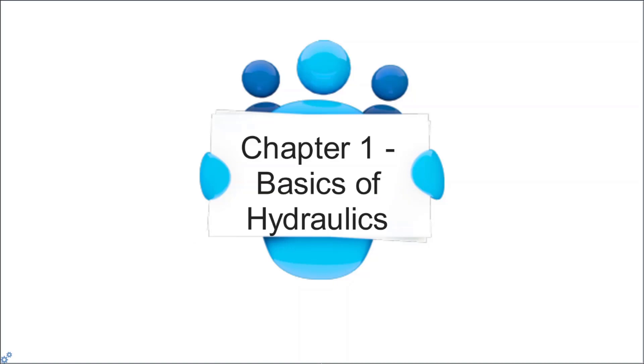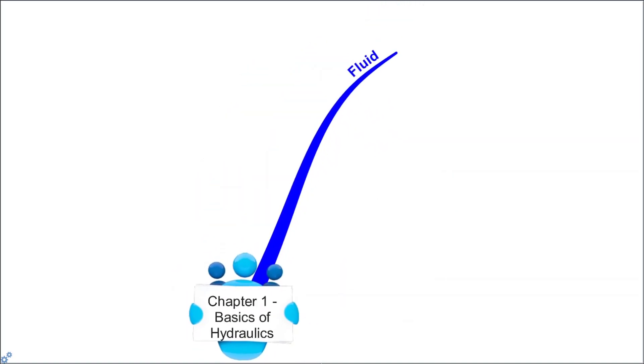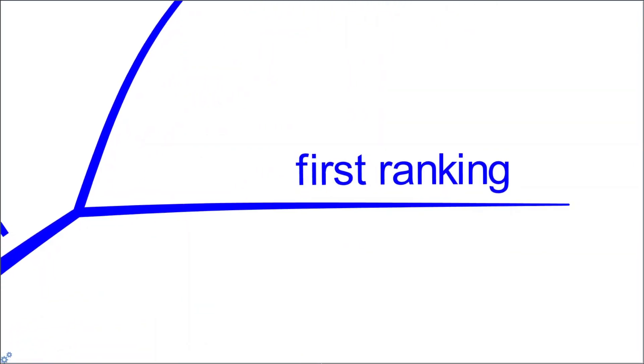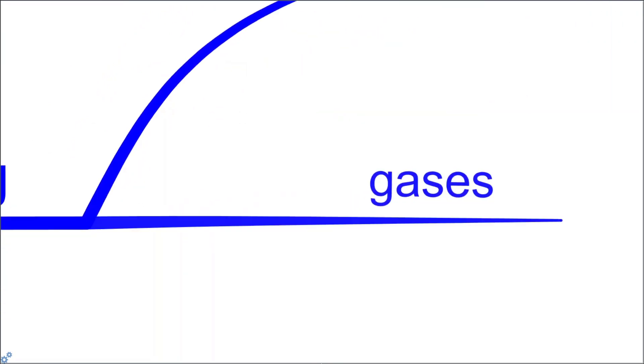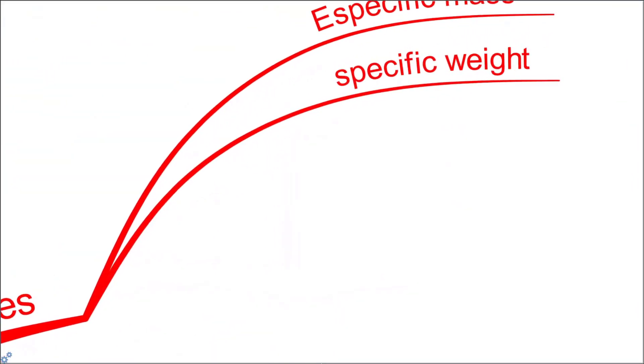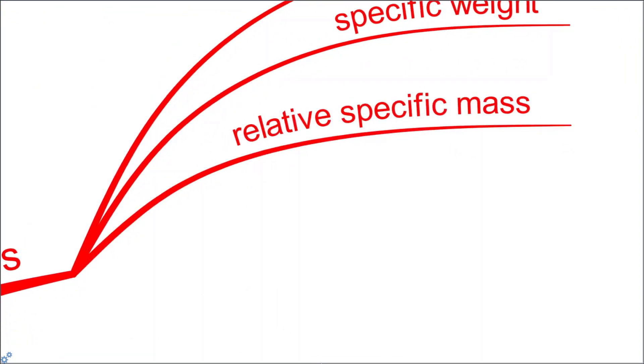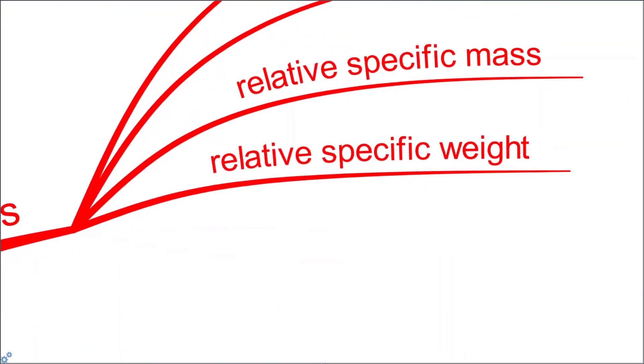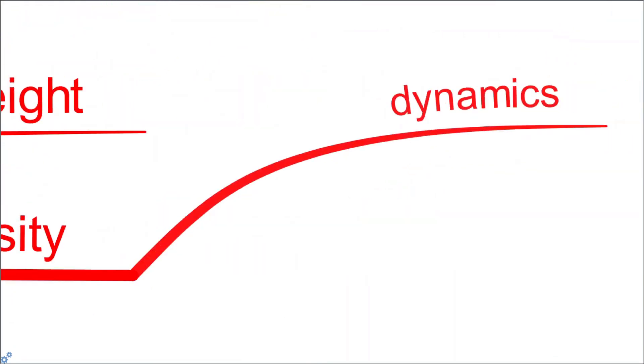Chapter 1: Basics of Hydraulics Fluid. Concepts include first ranking of fluids into liquids and gases. Basic fluid properties are specific mass, specific weight, relative specific mass, relative specific weight, viscosity (both dynamics and kinematics), and unity.